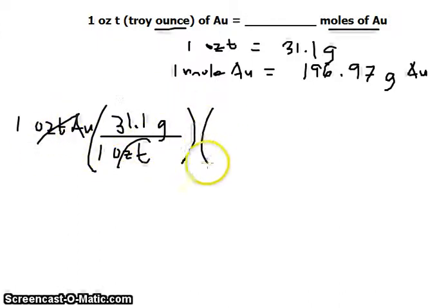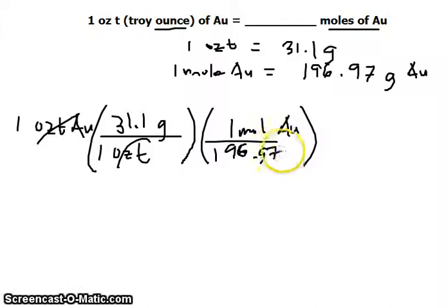And multiply it by the next conversion factor. 1 mole of gold, and this is equivalent to 196.97 grams. Now we can cancel the grams. And so we have a unit in moles.